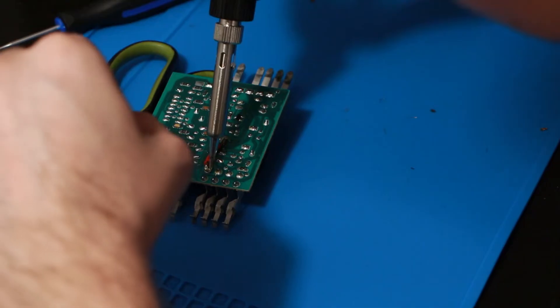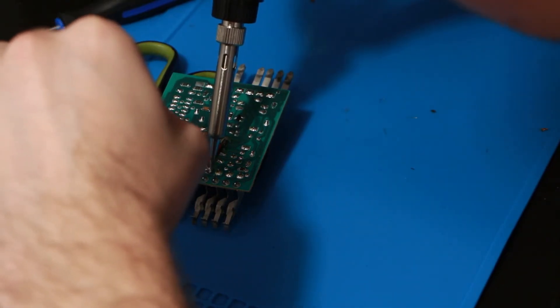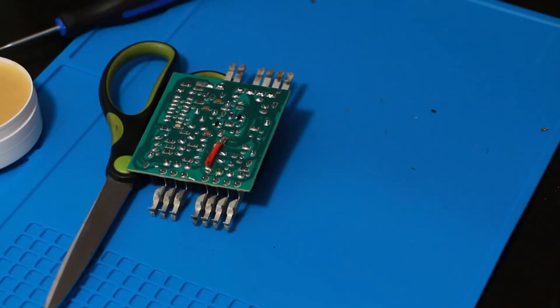If you don't have an adjustable soldering iron, the non-adjustable ones are fine as they usually run hotter than necessary. You will just have to move quickly for the smaller joint.